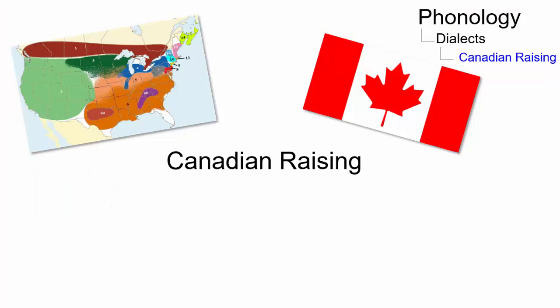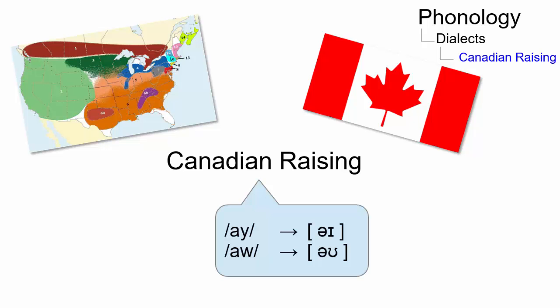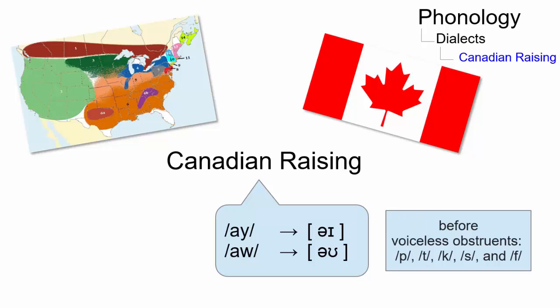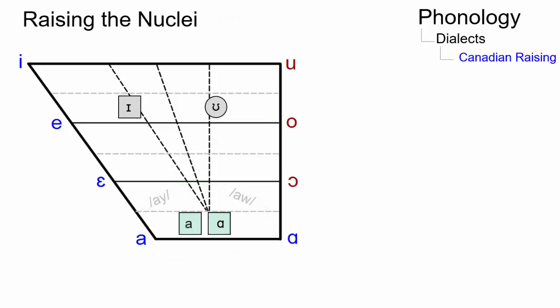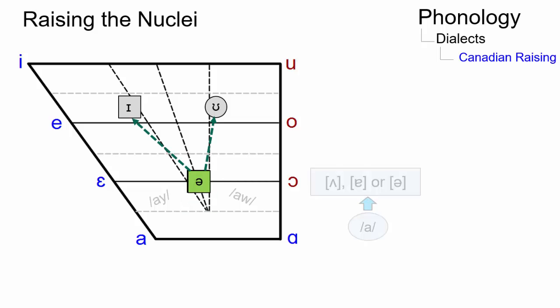Canadian raising is a vowel shift in many dialects of North American English where the diphthongs raise to mid-vowels before voiceless obstruents. Generally, the diphthongs have low vowels at their nucleus. In Canadian raising, the nucleus of the diphthong changes from the low vowel to a mid-low vowel.